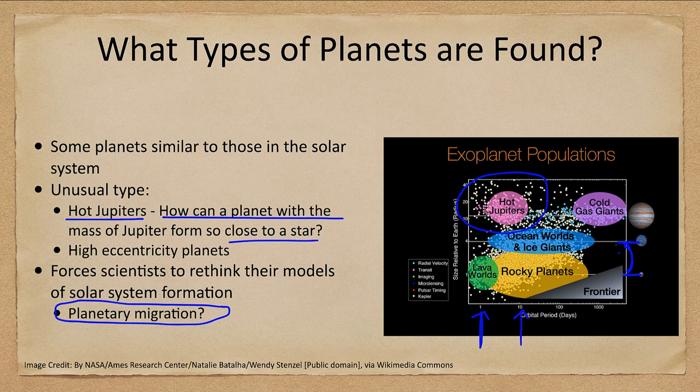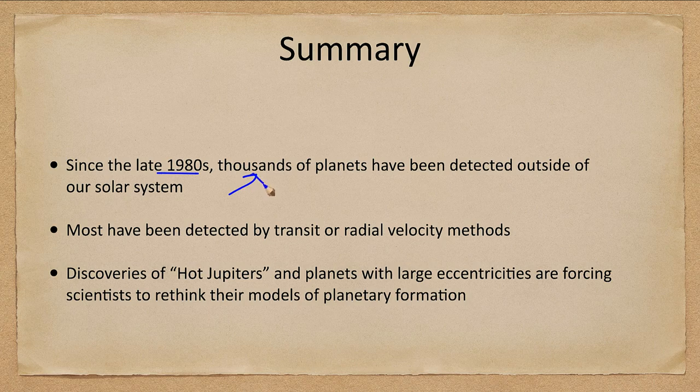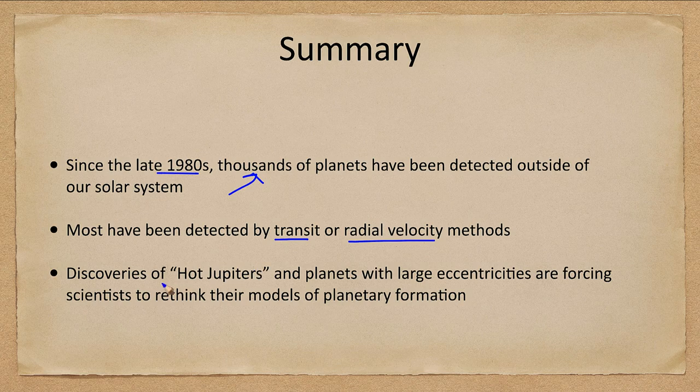Let's go ahead and finish up with our summary. What we've looked at here is that since the late 1980s we have detected thousands of planets outside of our solar system. Most of these have been detected by transit or radial velocity methods that we talked about here. We will discuss some other methods in a later lecture.